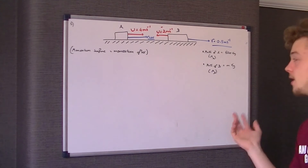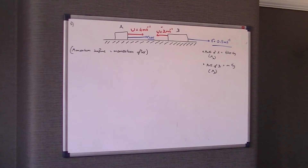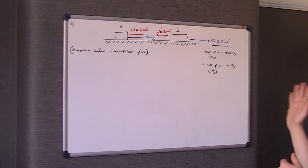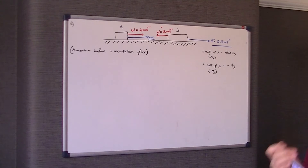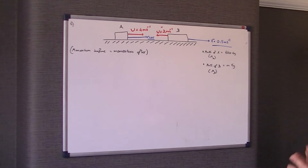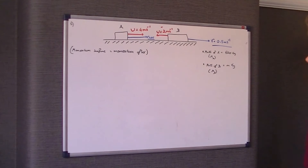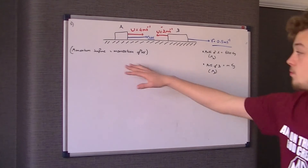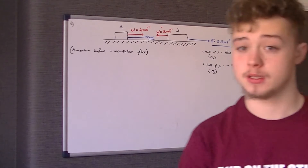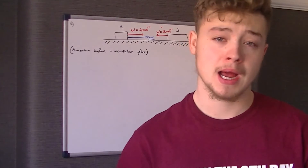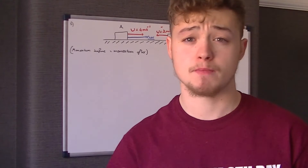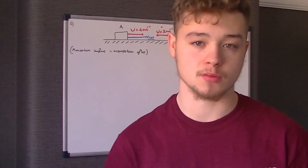Then, obviously, they both go right, because the direction of A, we're told, is unchanged. So they both have a speed of 0.5 metres per second. I've also put on the conservation of momentum, because that's essentially how you answer most momentum questions such as this.